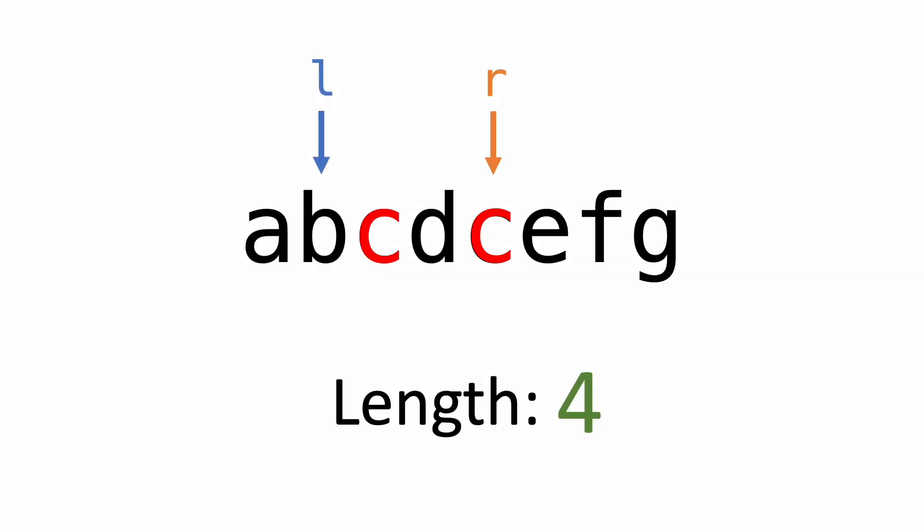So the conclusion is, we can also skip all substrings starting with the second letter B, because they're all going to be either invalid or too short. So we can move up the left pointer again. The same logic also applies to the third character. This substring is still invalid, any longer substrings will also be invalid.